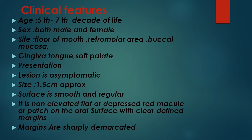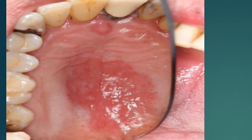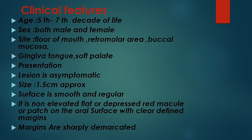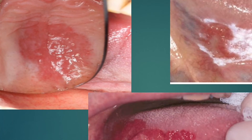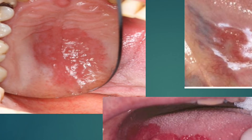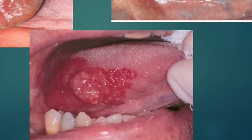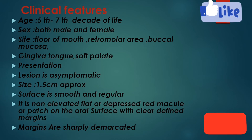It also occurs in the gingiva, tongue, and soft palate. The lesion is usually asymptomatic — not painful and with no burning sensation. The size is approximately 1.5 centimeters. The surface is smooth and regular — non-elevated, flat or depressed — and it presents as a red macule or patch on the oral surface with a clearly defined, sharply demarcated margin distinguishing it from the surrounding normal mucosa.